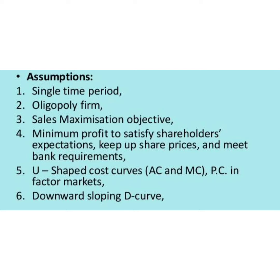Now we shall see the basic assumptions of the static models. There is a single period time horizon. We explain using the traditional U-shaped curves for total cost and total revenue. The minimum profit constraint is exogenously determined — determined by the demands and expectations of shareholders, banks, and financial institutions. These interested parties decide the level of profits, which acts as a constraint. Firms must surpass this level while trying to maximize total sales revenue.